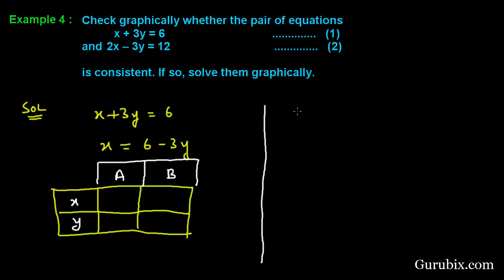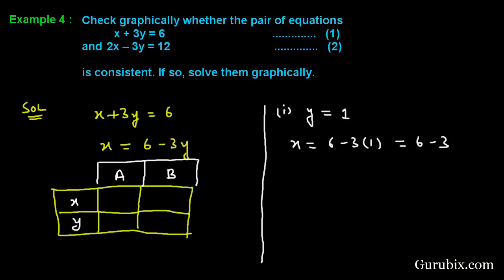We shall find the first point on the line by putting y = 1. Then x = 6 - 3 × 1 = 6 - 3 = 3. So we got the first point: when y = 1, x = 3.